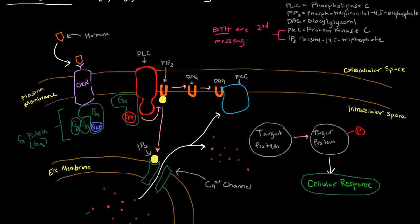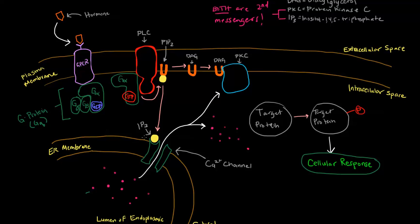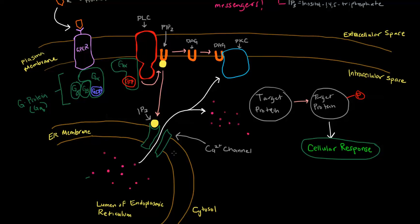So now what these two things do is IP3 goes over to the endoplasmic reticulum, and it binds a calcium ion channel. What it does is it allows the calcium from inside of the endoplasmic reticulum, specifically the lumen, to flow out into the cytosol. And some of them will actually bind this thing over here, which I'll get to in just a second.